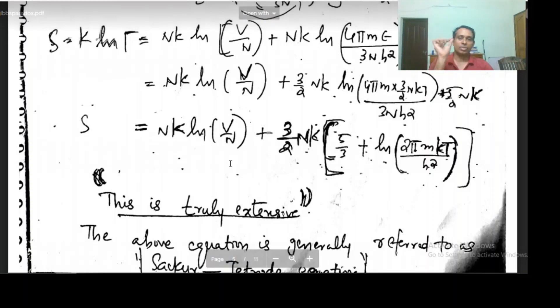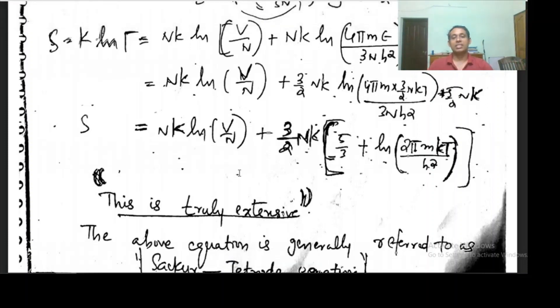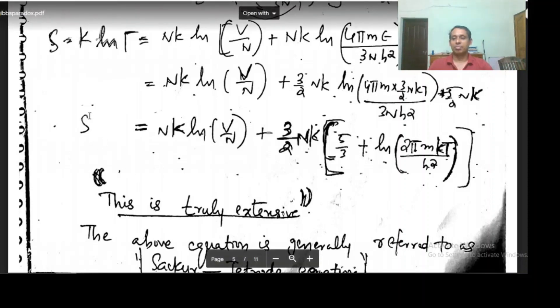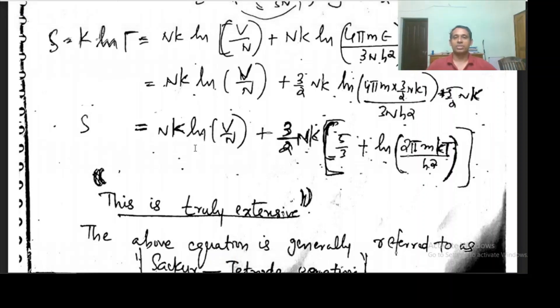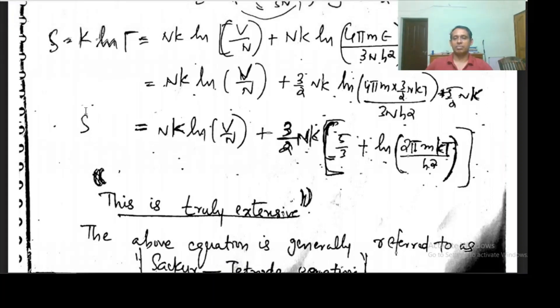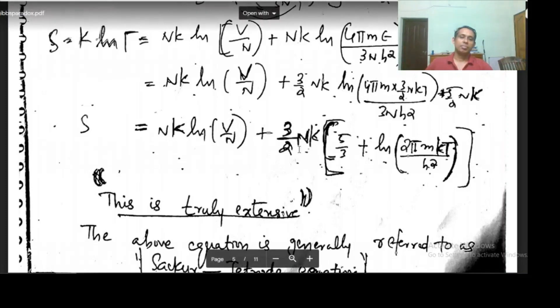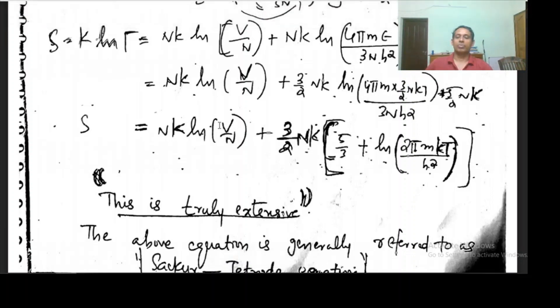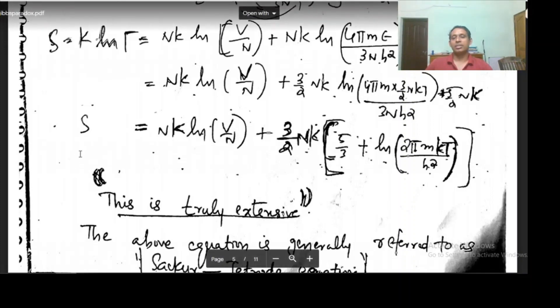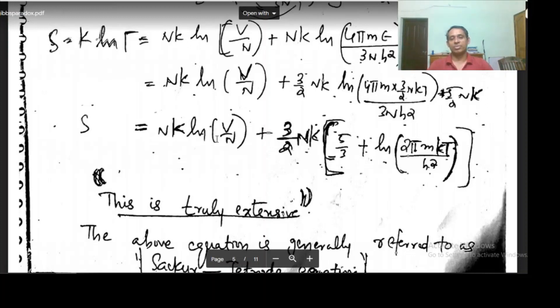In the earlier expression, entropy was not extensive, but here it is extensive. If we consider S prime — the entropy of the system when the size increases by a factor p — then S prime will have pn, pv, and pn. The p in the numerator and denominator of v/n cancels, so S prime will be p times S. This expression is truly extensive because of the v/n term.